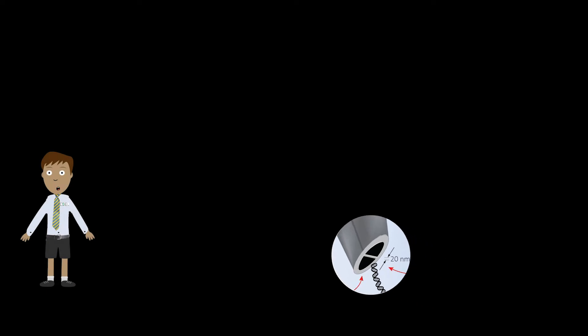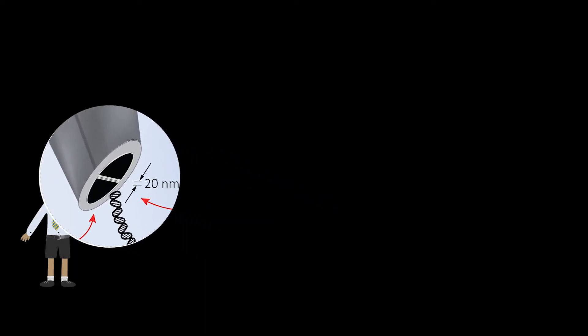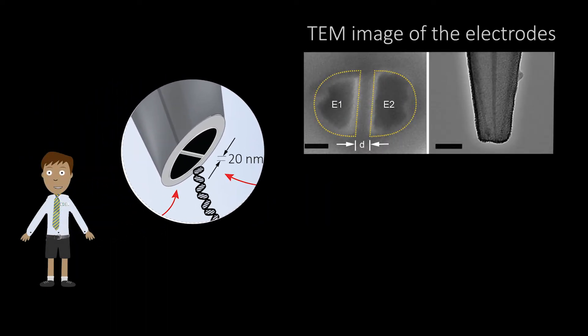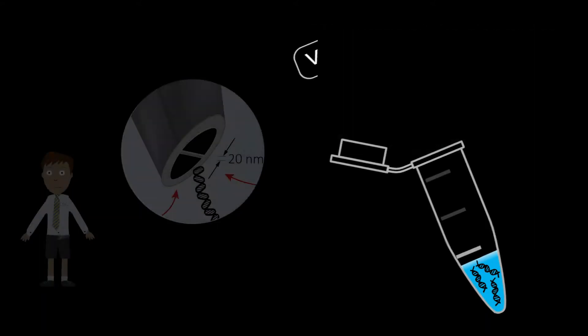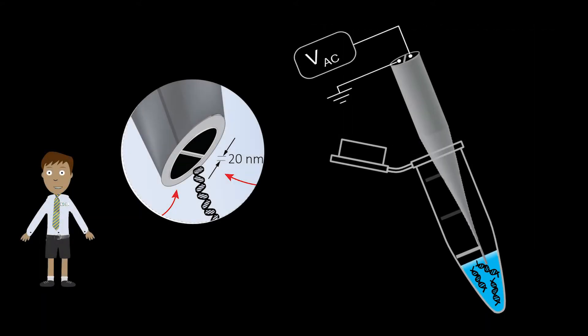Let me give you an example. Here, two electrodes are separated by a 20 nanometer spacer and the platform is immersed in a solution containing fluorescently labeled DNA.